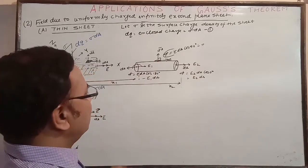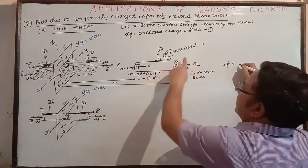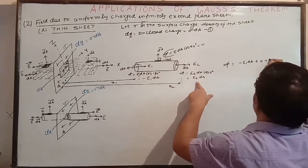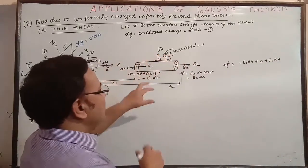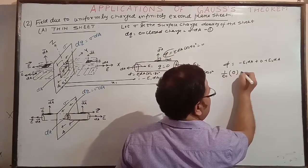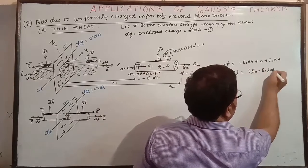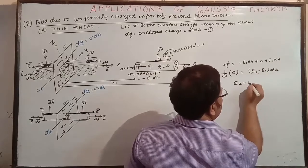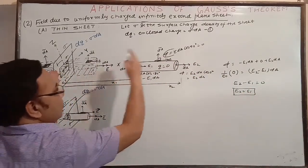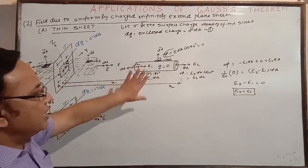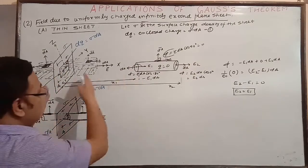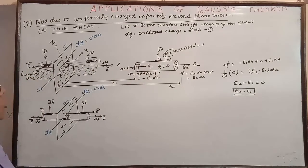The total flux is -E1·dA + E2·dA. In the enclosed zone between the two caps there is no charge, so q_enclosed = 0. By Gauss's law, phi = q_enclosed / epsilon_naught = 0. Therefore E2 - E1 = 0, which gives E2 = E1. This proves that the electric field is the same at any two different distances from an infinitely extended thin sheet, irrespective of distance.